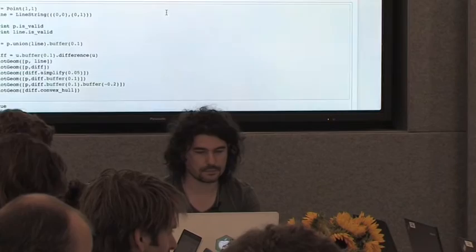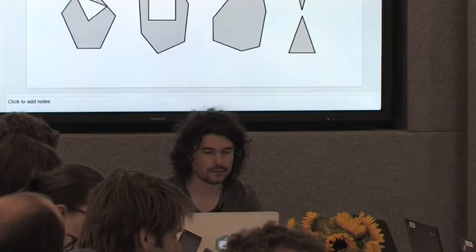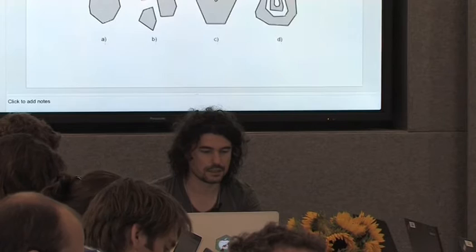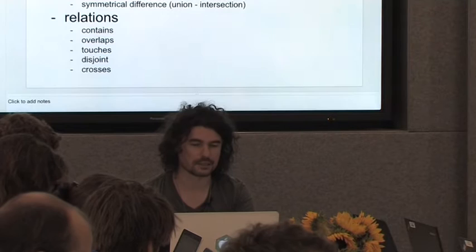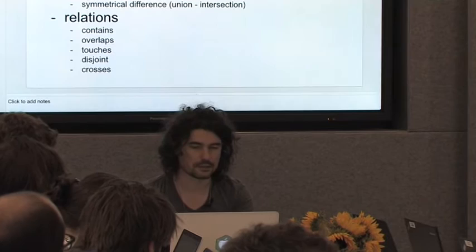Things you can do with geometries — there are quite a few. First of all, you can do some set operations. For example, you can union two different polygons or two different geometries, and then you will get another geometry. Let's have a look at how it looks like.